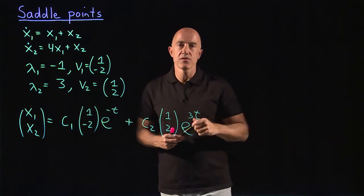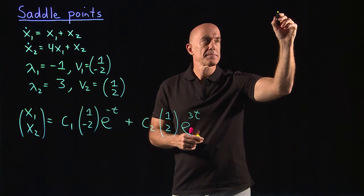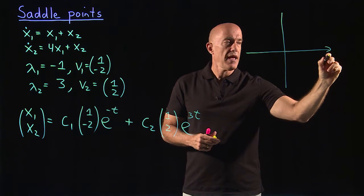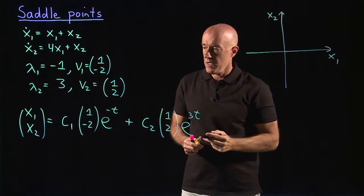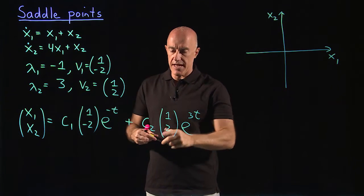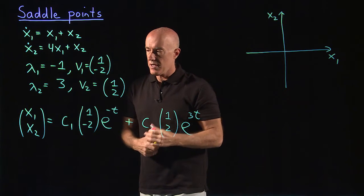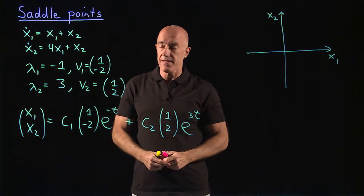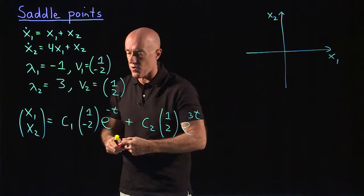So again, we want to draw the phase portrait. We're drawing x2 versus x1. If we consider the case where initial conditions where c2 equals 0, then x1 and x2 follow the first eigenvector. x1, x2 is always going to be minus 2 times x1.